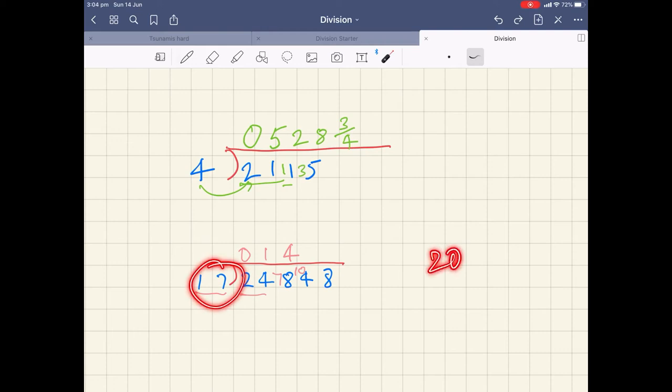So once again, I'm going to use my rounding. I'm going to stick with 17 being about 20 and 104 being about 100. So how many 20s go into 100? It's 5. 20, 40, 60, 80, 100.